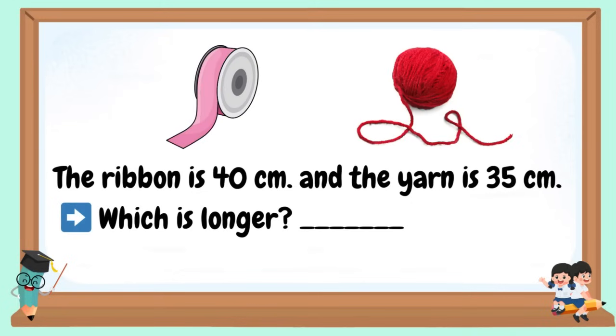The ribbon is 40 cm and the yarn is 35 cm. Which is longer?